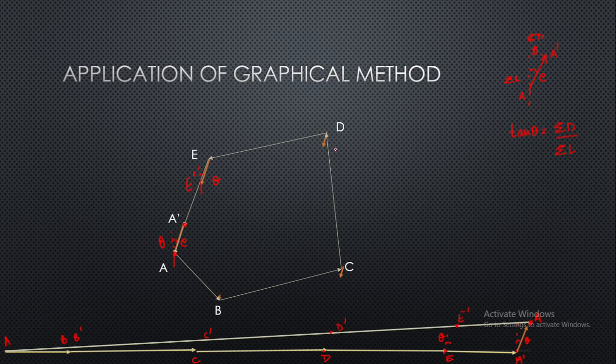So I have marked D, D dash, and this will be over slightly over here. D dash, B dash. Now we will join the points of all the dash with A: A, E dash, D dash, C dash, B dash, and A.